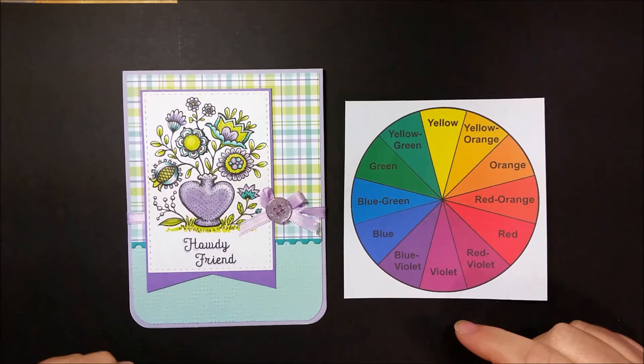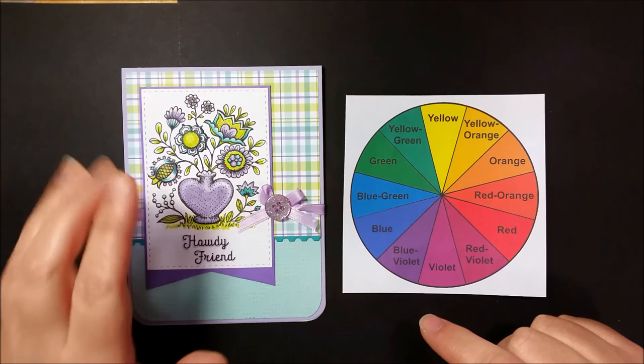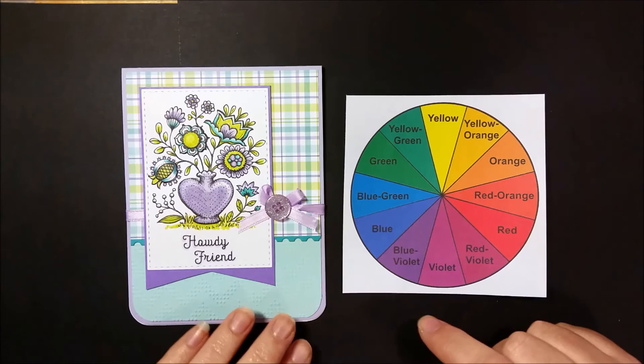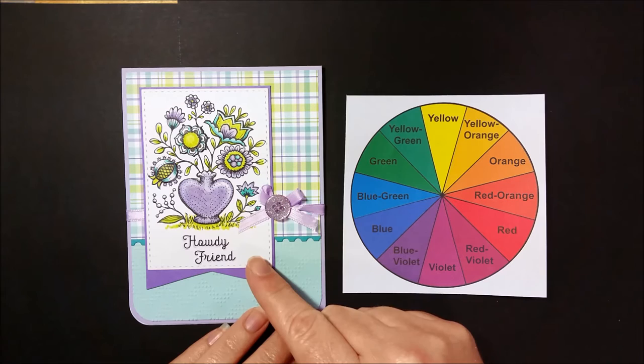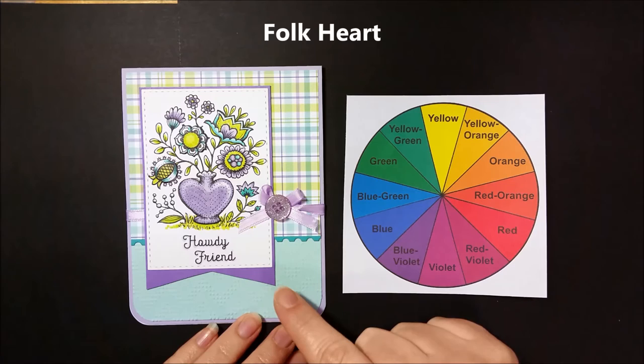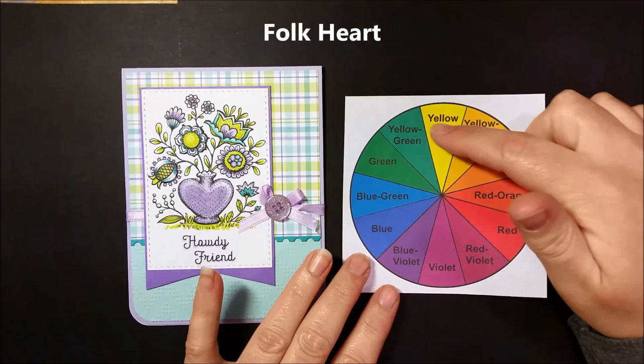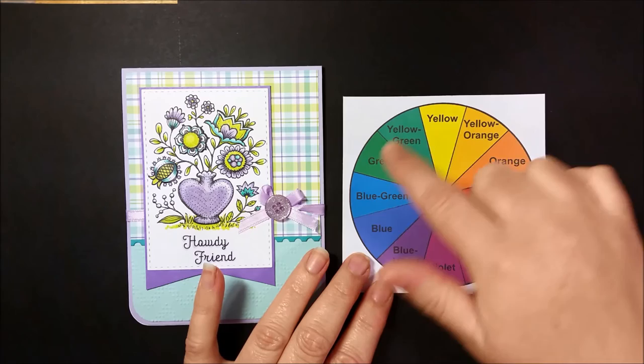All right, let's go through some examples here. For the stamp sets, I will be sure to put them up in the top corner of the screen there so you know all of the fabulous stamp sets that you can purchase through Power Poppy. Our first card, we're going to talk about cool colors and warm colors. Warm colors are yellow all the way over to the red-violets, and the complete opposite side are all the cool colors.